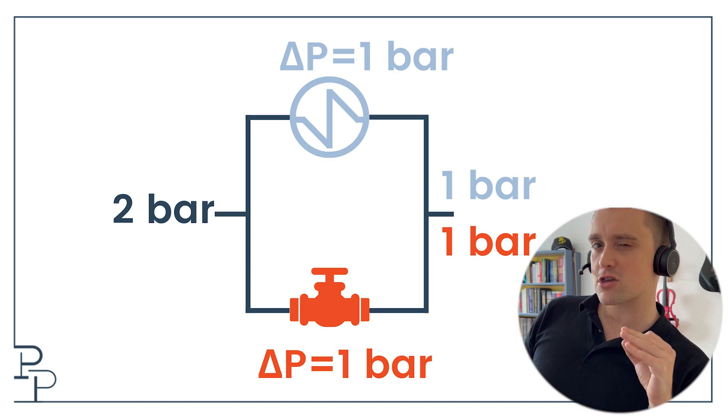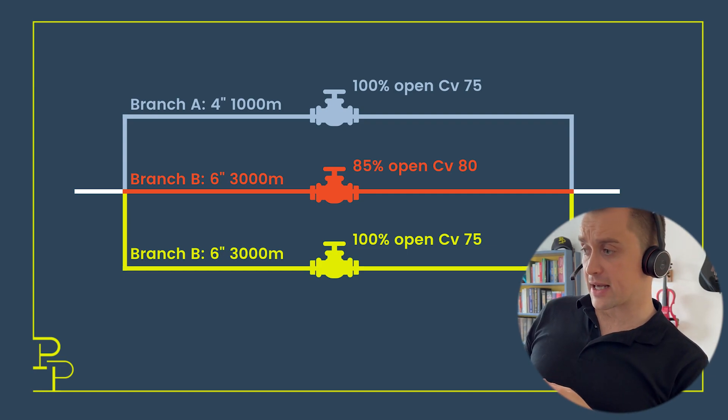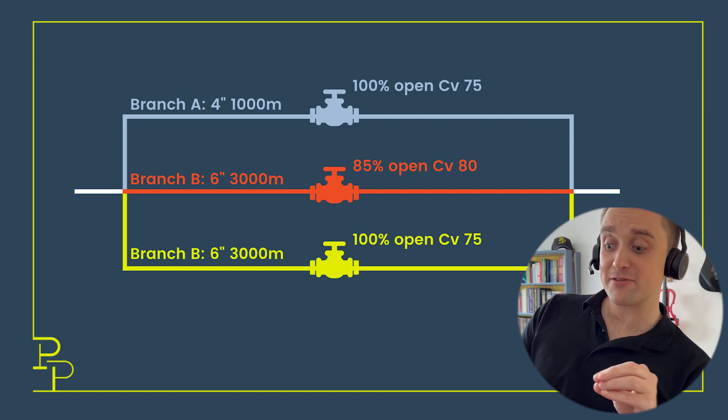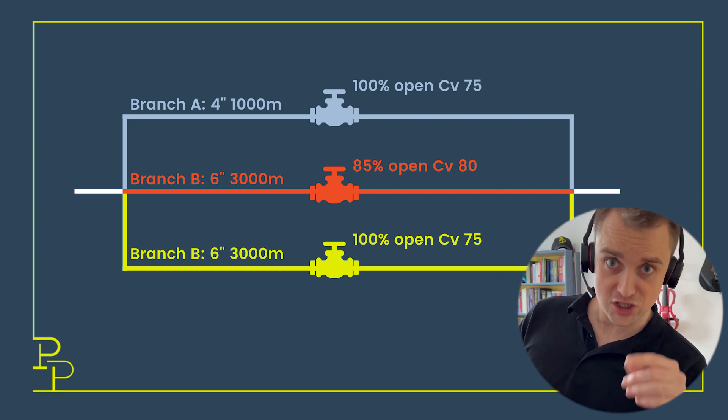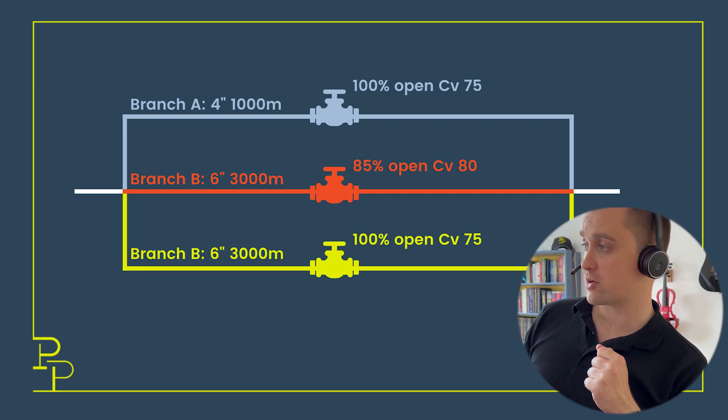I'm going to take the three same branches that I analyzed, but instead of looking at the case where they converge again, I'm going to make up different terminating conditions for each of those branches and then see how to develop the system curve for the three parallel branches.